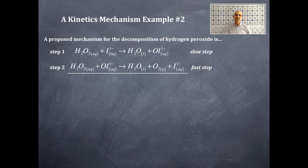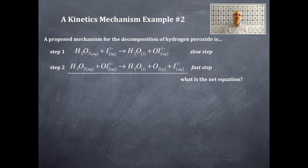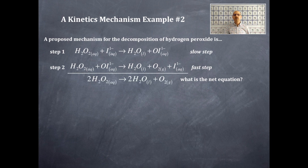We're going to draw a line underneath both step one and step two and ask: what is the net equation? The net equation is found by summing things up, paying attention to what cancels out on the reactant and product sides. The net equation is: 2H₂O₂ produces 2H₂O plus O₂ (gas). Certain things cancel out, and the waters and hydrogen peroxide sum to give you two of each.